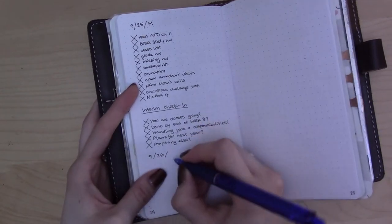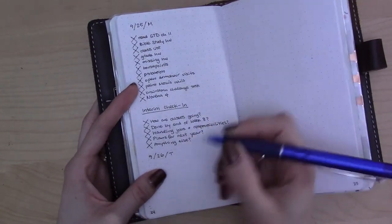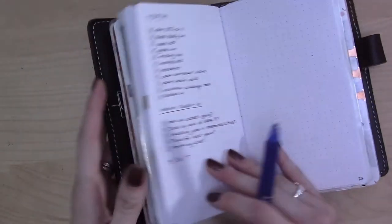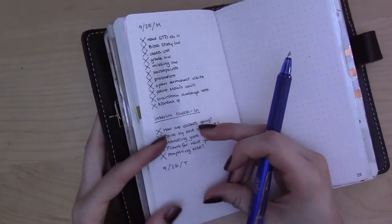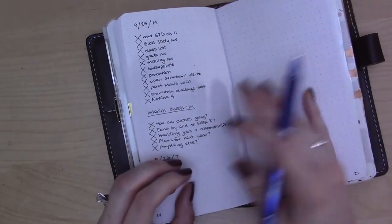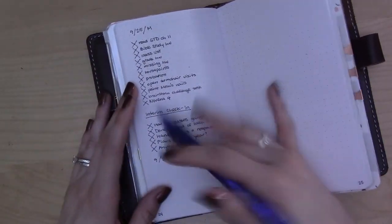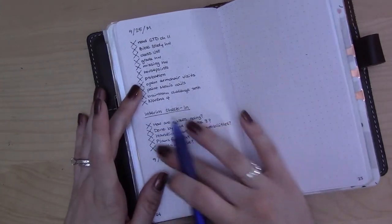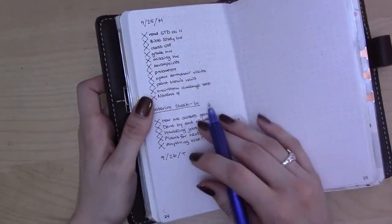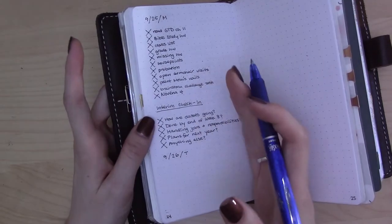In previous setups I've put them on a sticky note so that I can move it throughout the week as I move throughout time. But I figured my dailies are pretty compact so leaving it here and having to flip back a couple pages wouldn't be a problem. I was pretty confident that we would get it done at least within this week.